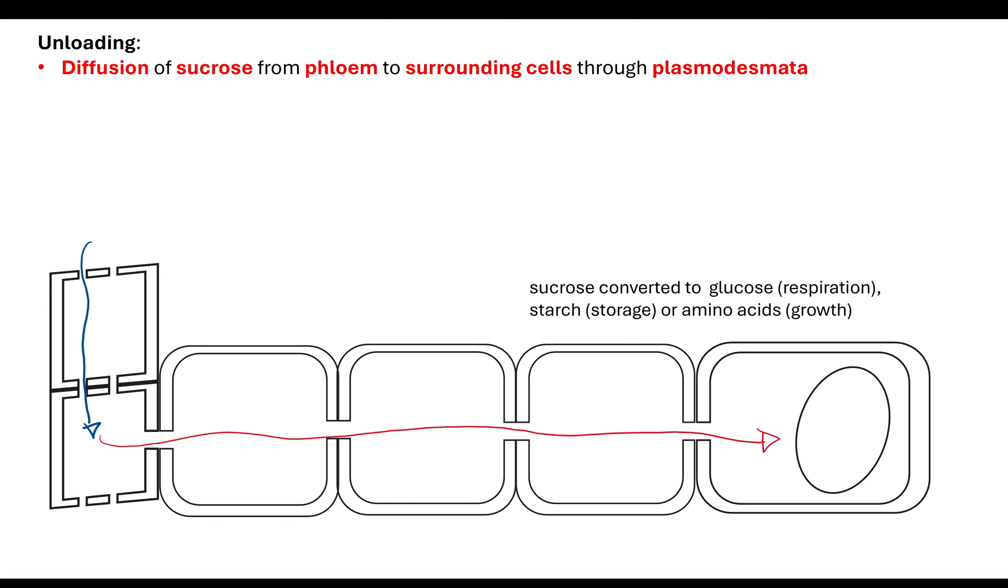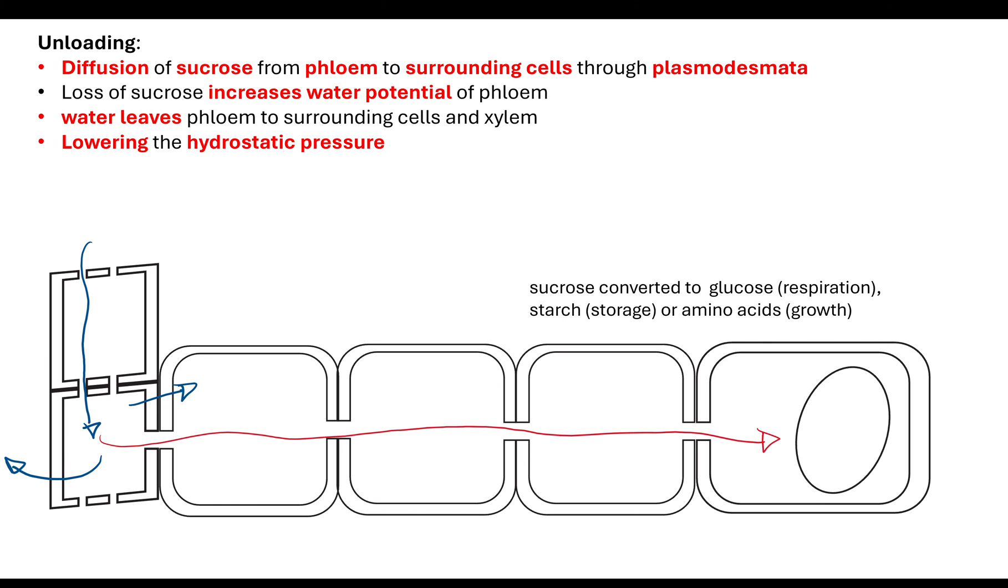If we're going down to the sink, we need to unload the sucrose. The sucrose diffuses from the phloem to surrounding cells through the plasmodesmata. The sucrose is then converted back to glucose for respiration, or converted into starch as a storage molecule, or into amino acids for growth. That removal of sucrose increases the water potential of the phloem, so water leaves the phloem to surrounding cells and xylem, lowering the hydrostatic pressure.